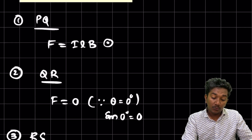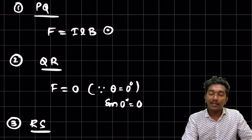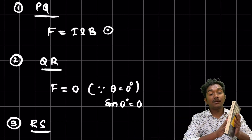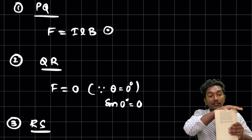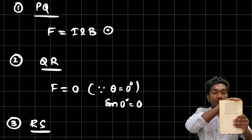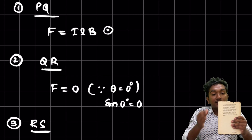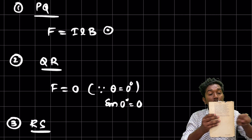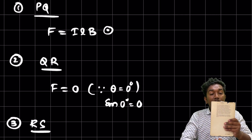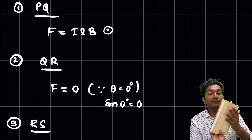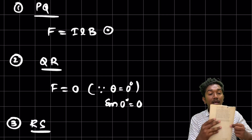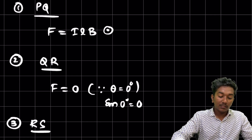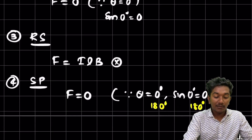So out of the four conductors, two have zero force and two have forces acting in opposite directions. Look at the loop: the force on one side is inward and the force on the other side is outward. So the loop will have a tendency to rotate — this is what is called torque.